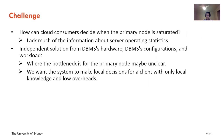For example, for one workload the bottleneck might be on the CPU, but when you change to another workload the bottleneck might be disk IO. We also want our system to make local decisions for a client with only local knowledge and low overheads.